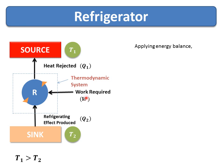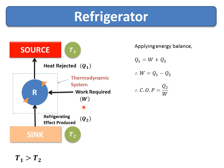Applying the energy balance equation for the refrigerator: W and Q2 are both coming into the system, while heat Q1 is rejected from the system. So W plus Q2 equals Q1, and therefore work equals heat rejected minus the refrigerating effect produced. The performance of the refrigerator is measured by the coefficient of performance, COP, which equals output divided by input — that is Q2 divided by W.